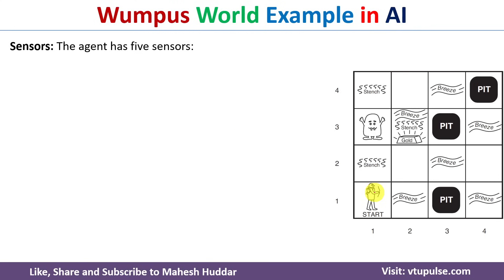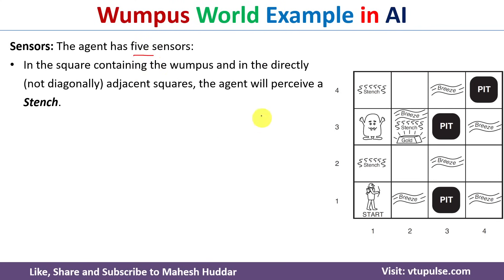The last component is sensors. The agent is equipped with five sensors. The first sensor is used to sense the stench — whenever the agent is present in a room where the Wumpus is present or adjacent to the Wumpus room, he will perceive the stench, which is a bad odor. For example, when present at 1,2 he will sense the stench because that room is adjacent to the Wumpus. When present at 1,4 he will again sense the stench. But when present at 2,2 he will not sense the stench because it is not adjacent to the Wumpus.